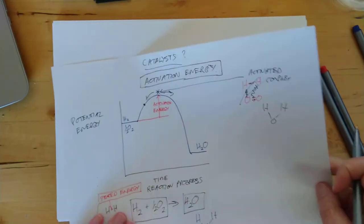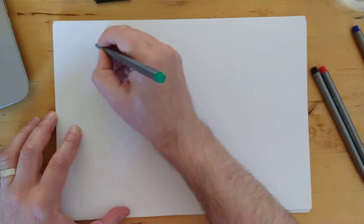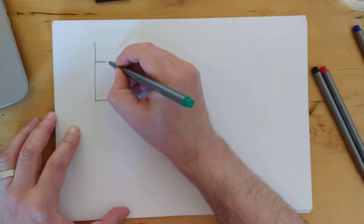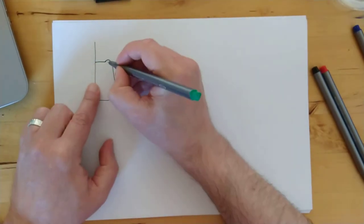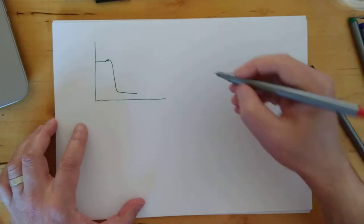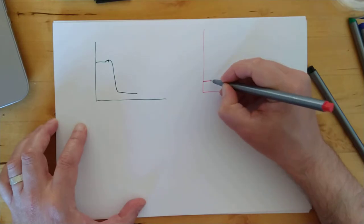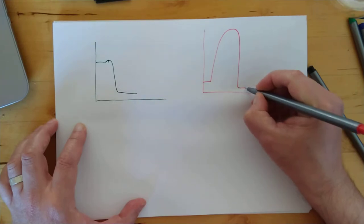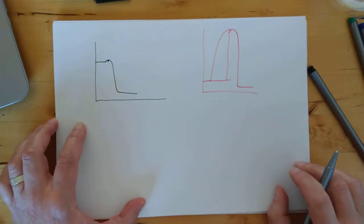And just for an illustration of that, so here would be an example of a reaction which has very small activation energy. So here's where you start. There's your activation energy. And here would be an example of a reaction that has got a really high activation energy. So the activation energy is from where you start to the highest point. Happy with that?